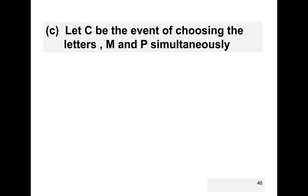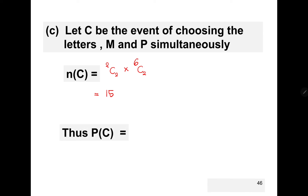For the third question, let C be the event of choosing the letters M and P simultaneously. The number of event C: we have one choice for M and one for P, so 2 choose 2, and we have two remaining seats to fill from the other six letters, giving 6 choose 2, which equals 15. Thus the probability of event C is 15 over 70, which equals 3 over 14.